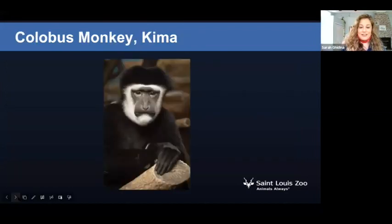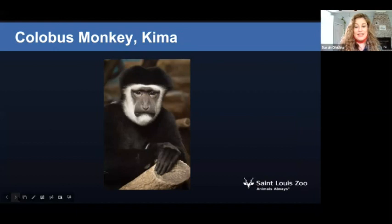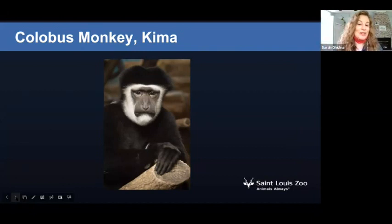Moving on to our next animal dad — a colobus monkey named Kima. He's the dominant male of our colobus monkey troop at the zoo. He has six kids that live with him and two more that are all grown up and live at other zoos. As the dominant male, his job is to watch over the whole troop, protect them, and play with the youngsters.